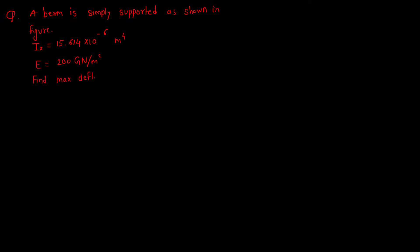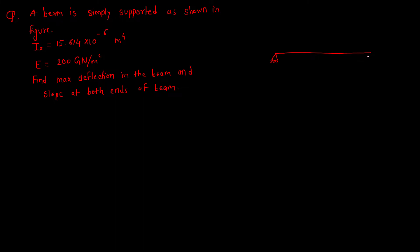We have to find: maximum deflection in the beam, and slope at both ends of the beam. In the diagram, it is a simply supported beam subjected to a point load at the center. The value of the point load is 30 kN, and each half-span is 1.5 m, giving a total length of 3 m.